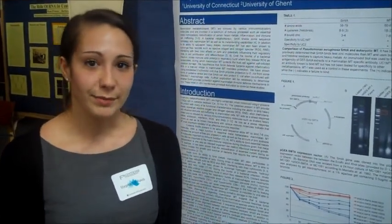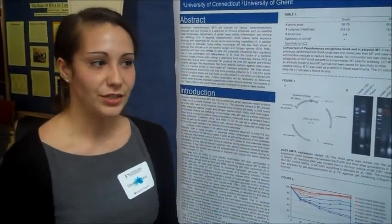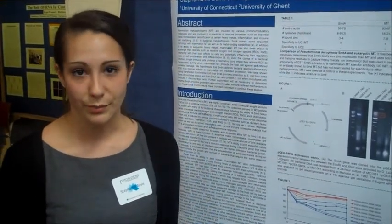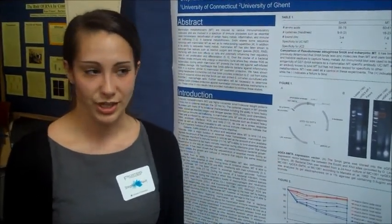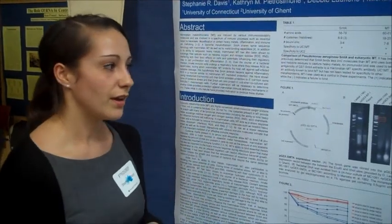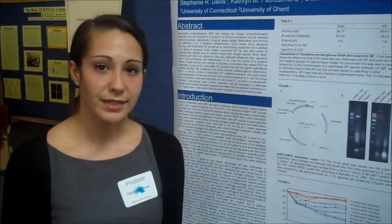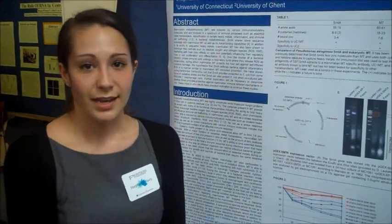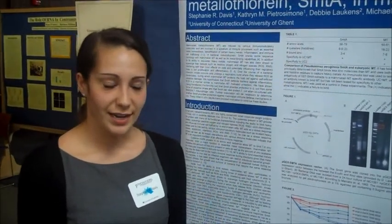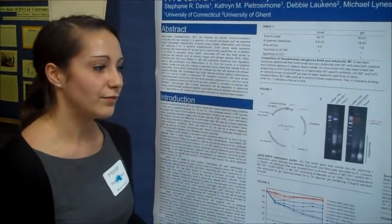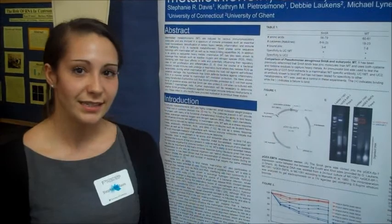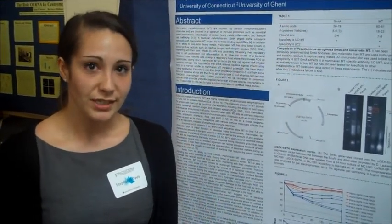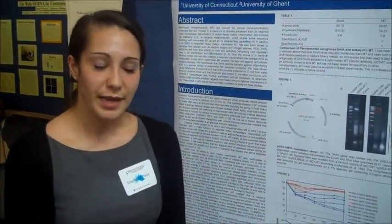Mammalian metallothioneins can bind heavy metals like zinc, which we know is important to immune function. They can also cause chemotaxis of our white blood cells, causing them to move in a certain direction according to a gradient. And finally, mammalian metallothioneins can bind reactive oxygen species and neutralize them, protecting our cells from them.